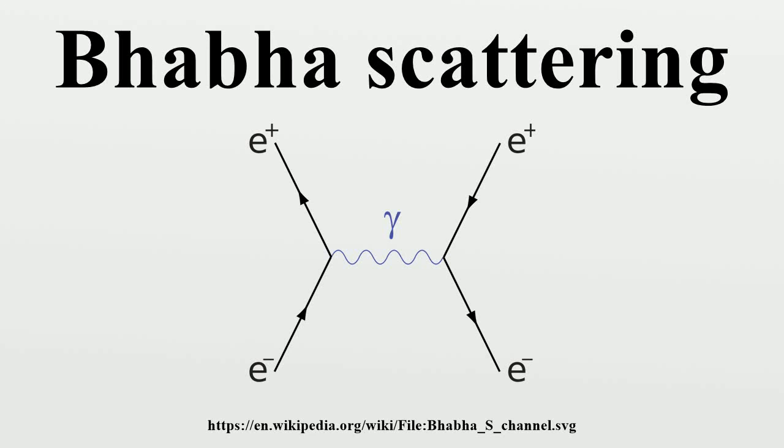In quantum electrodynamics, Bhabha scattering is the electron-positron scattering process. There are two leading-order Feynman diagrams contributing to this interaction: an annihilation process and a scattering process.